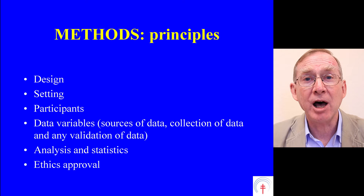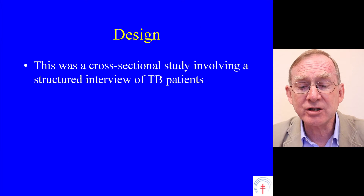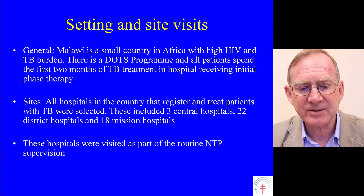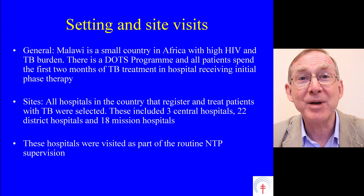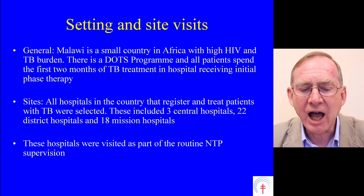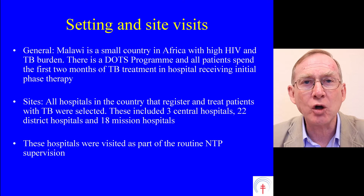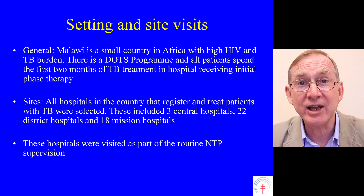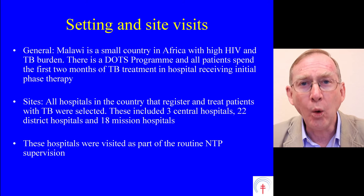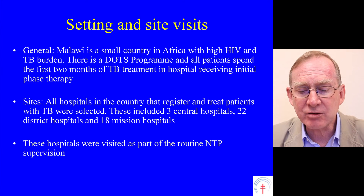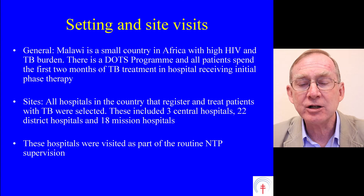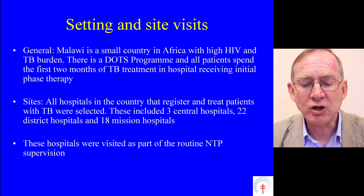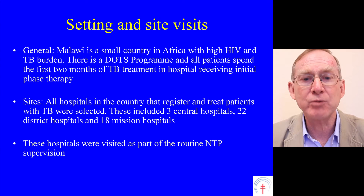This is how we would write this part of the paper. Design: 'This was a cross-sectional study involving a structured interview of TB patients.' Setting and site visits — General: 'Malawi is a small country in Africa with high HIV and TB burdens. There is a good DOTS programme and all patients spend the first two months of TB treatment in hospital receiving initial phase therapy.' Sites: 'All hospitals in the country that register and treat patients with TB were selected. These included three central hospitals, 22 district hospitals, and 18 mission hospitals. These hospitals were visited as part of the routine national TB programme supervision.'